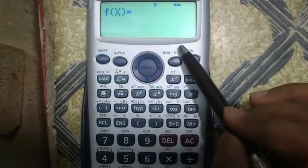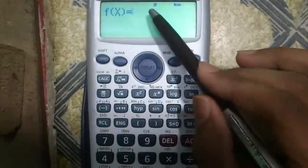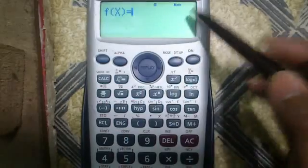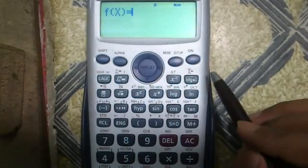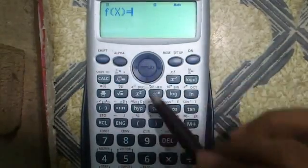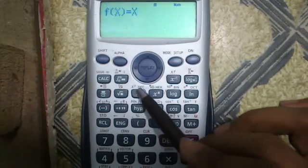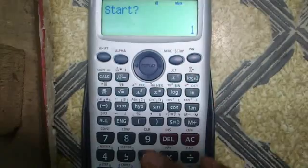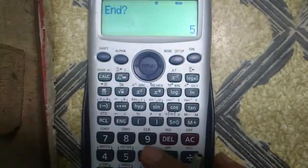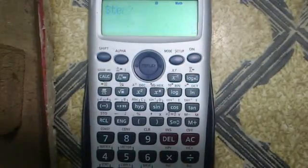This mode generates a table based on f(x) or function of x for a given range of x. The function may be a simple function, for example x square. Press alpha and this button for x, square press equals to, enter start of the range say 1, enter end of the range say 10, and press equals to.